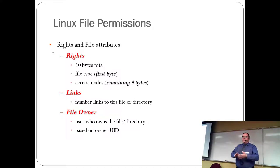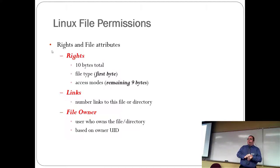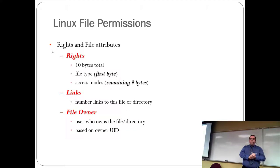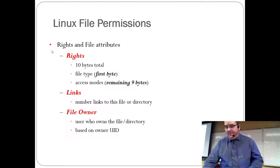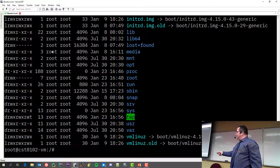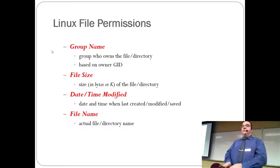The other things you'll see are the rights, also known as permissions — the things you're allowed to do. There are 10 bytes total: the first byte is the file type, and the remaining nine bytes are the permissions themselves. After that comes the number of links, who owns it based on user ID, the group, file size, date modified, and the file or directory name.